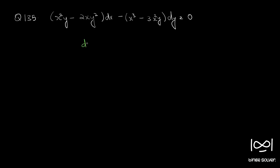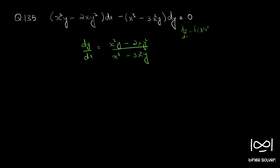We will write dy by dx from the given equation. This becomes (x squared y minus 2xy squared) divided by (x cubed minus 3x squared y). If you divide both numerator and denominator by x cubed, you can see that dy by dx is a function of y by x — it is a homogeneous function.